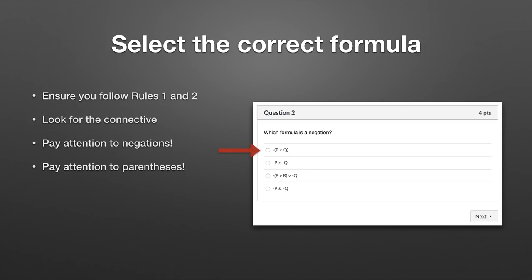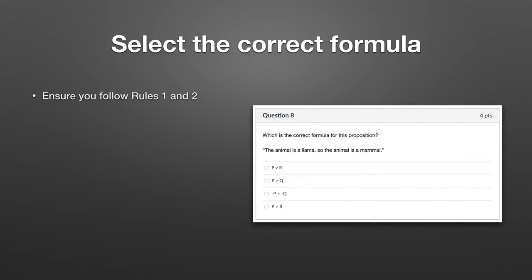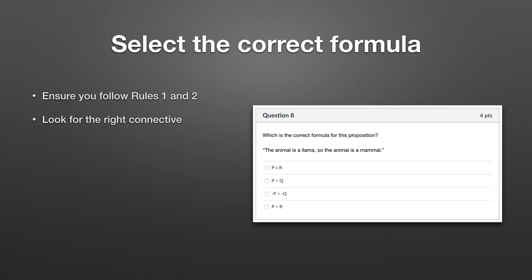Now you're given a sentence in English and supposed to find the formula that represents it. For example: 'the animal is a llama, so the animal is a mammal.' The word 'so' is the connective — it gives us a kind of inference from the first to the second, making it a conditional. 'The animal is a llama' is one atomic proposition, 'the animal is a mammal' is the other. So is this a disjunction? No — the connectives for disjunctions are 'or,' 'unless,' or 'either...or.'